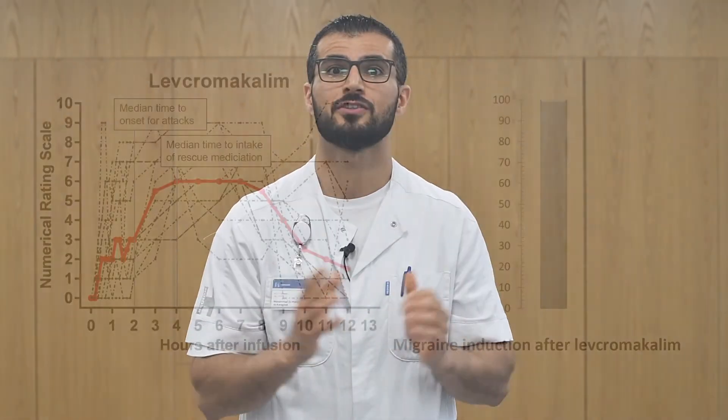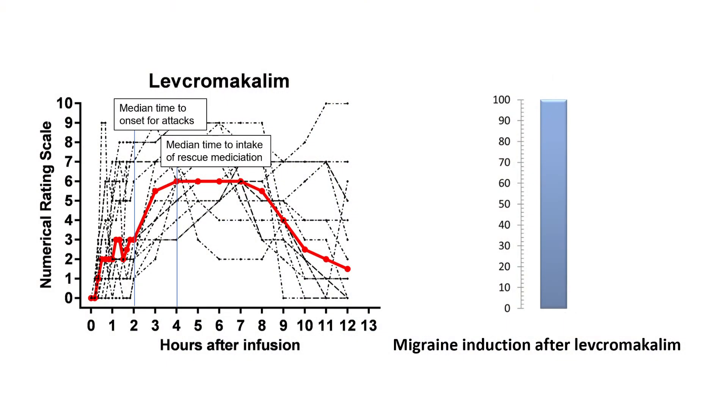And now for the results. 16 patients completed the study. All of these patients developed migraine attacks after levcromakalim compared with one patient after placebo. There was no change in mean middle cerebral artery blood flow velocity. However, we found a significant increase of temporal artery diameter, but no change of radial artery diameter after levcromakalim compared with placebo.